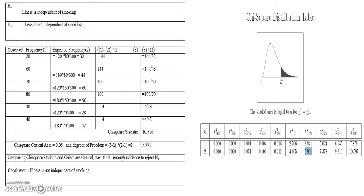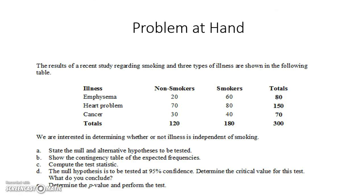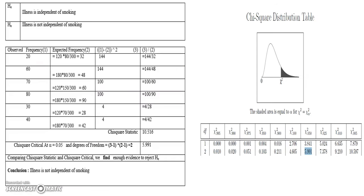We need to find the chi-square critical value at a level of significance of 5%, i.e., α = 0.05, and we need to calculate the degrees of freedom. The table is a 3×2 matrix — 3 rows and 2 columns — so degrees of freedom = (rows − 1) × (columns − 1) = (3−1) × (2−1) = 2.